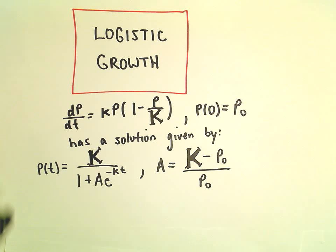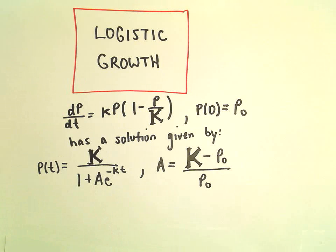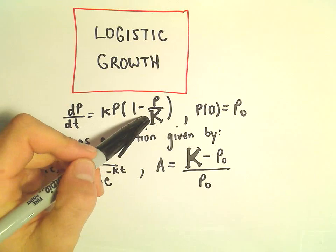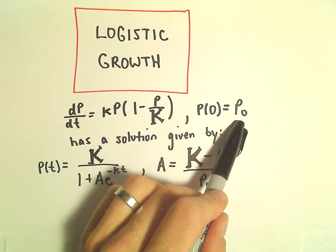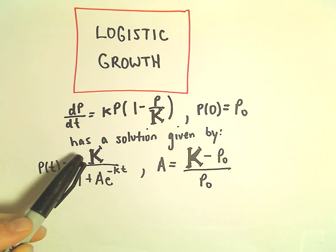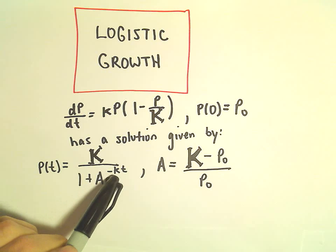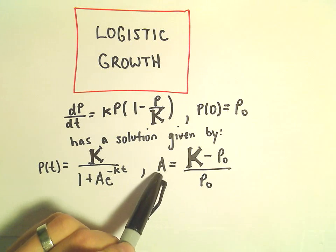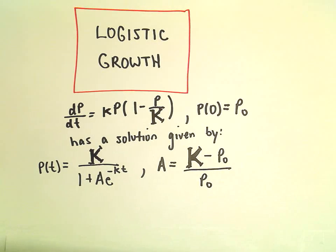All right, for the logistic differential equation, dP/dt equals little k times capital P times 1 minus capital P over capital K, where P sub 0 equals P naught, the solution P(t) is given by capital K over 1 plus A times e to the little k times t, where A is capital K minus the initial population over the initial population.